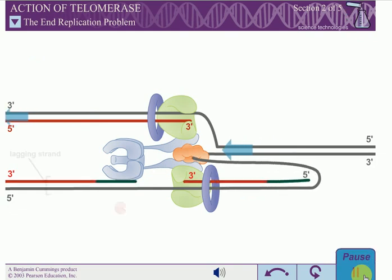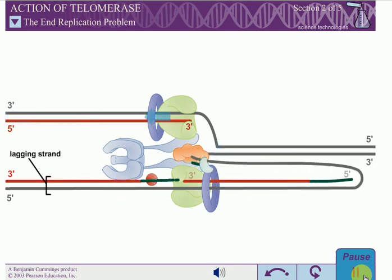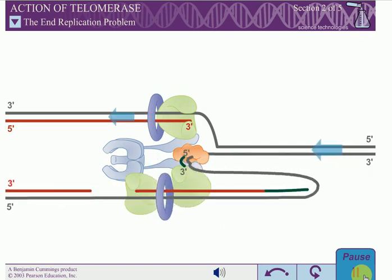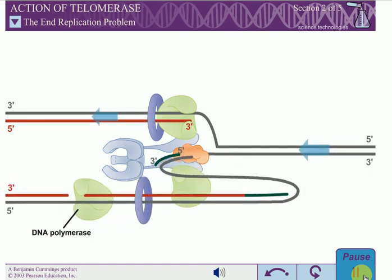During replication, the lagging strand is synthesized as short fragments called Okazaki fragments. The RNA primers are removed by RNase H, filled in by DNA polymerase, and ligated by DNA ligase.